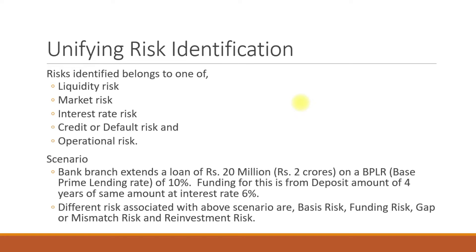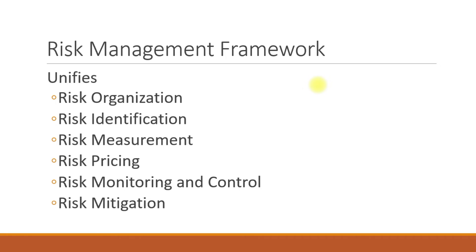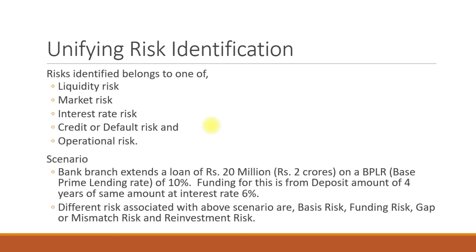Next is risk identification. Risk identified belongs to one of the following categories: liquidity risk, market risk, interest rate risk, credit or default risk, and operational risk. All these risks are dealt with at a transactional level. Liquidity risk and interest rate risk are also dealt with at a portfolio level. Credit risk, market risk, and operational risk are dealt with at both transactional and portfolio levels.